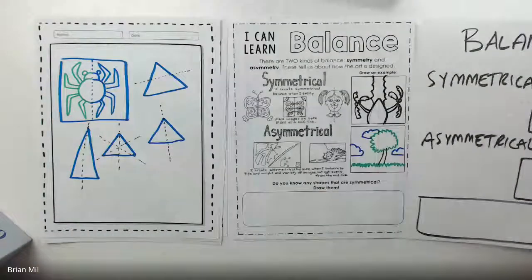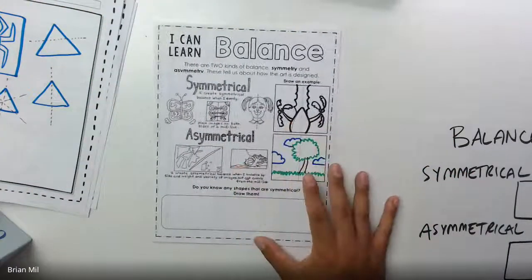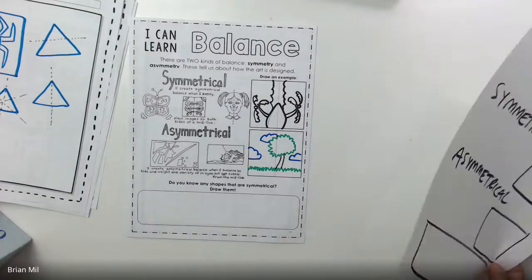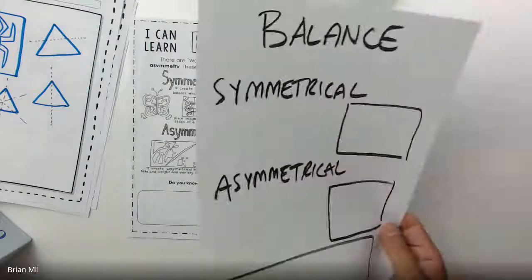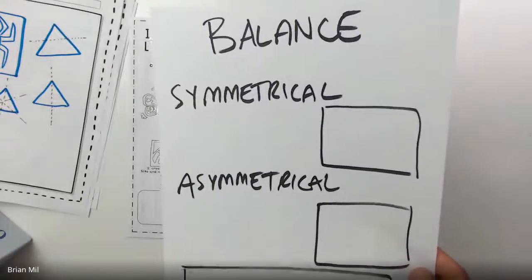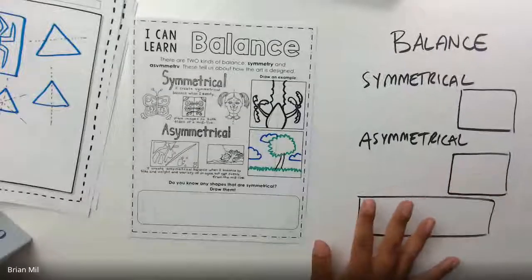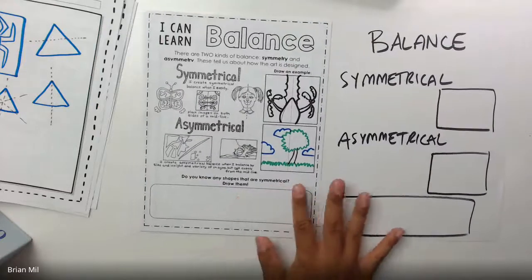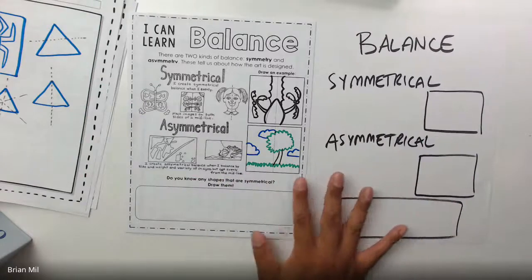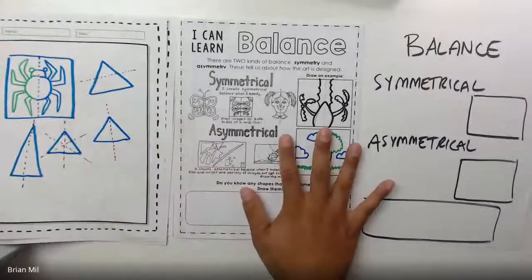The page we're working on today looks like this — it's called balance. I drew this out just in case you don't have the packet. If you have a blank sheet of paper, organize it with 'balance' at the top, one box that says 'symmetrical,' another box that says 'asymmetrical,' and a blank rectangle at the bottom. If you don't have the packet or a blank sheet, just watching is fine too.